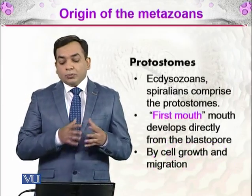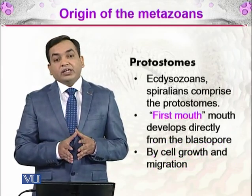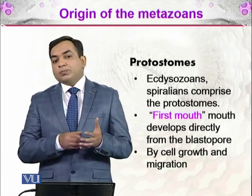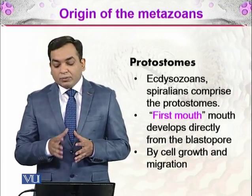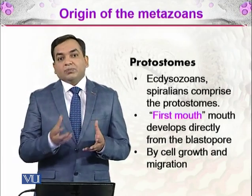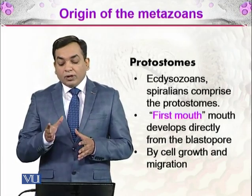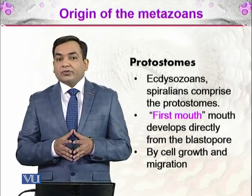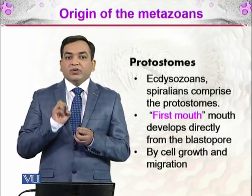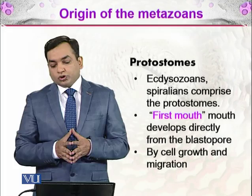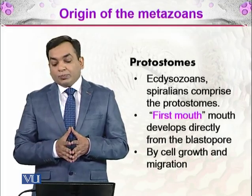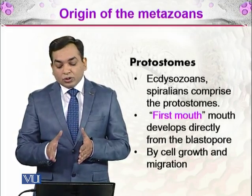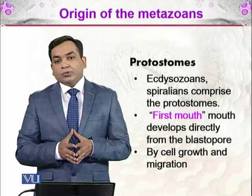The protostomes — 'proto' means first and 'stome' means mouth — include the ecdysozoans and spiralians. Protostomes are organisms with the first mouth, which develops directly from the blastopore by cell growth and migration. Whatever organ they use to eat comes from the blastopore, which is why they are called protostomes.